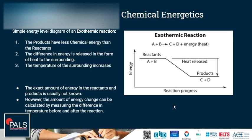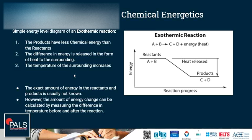In a simple energy level diagram for an exothermic reaction, the products have less energy than the reactants. On the y-axis we have the energy scale, and the x-axis shows the reaction progress. A plus B react to form C and D, and some energy is released. The reactants have more energy than the products, and the energy released is given off in the form of heat, so the temperature of the surrounding increases.